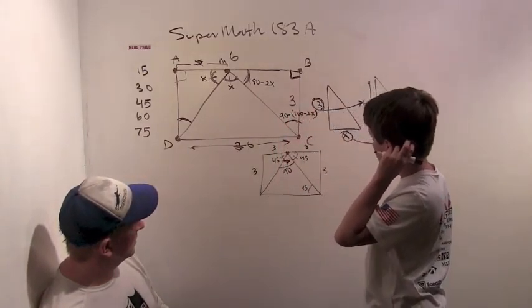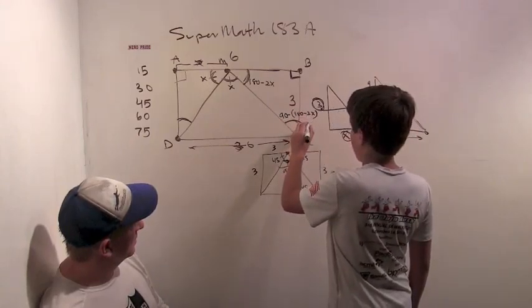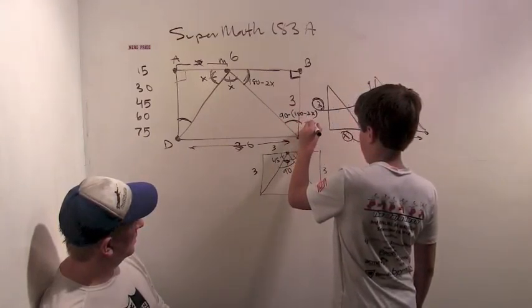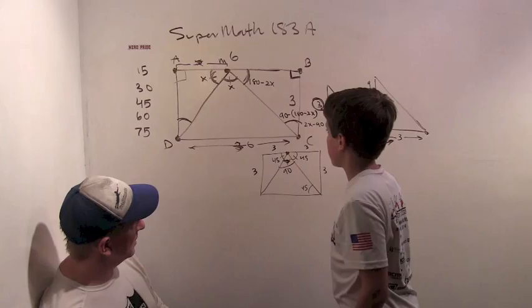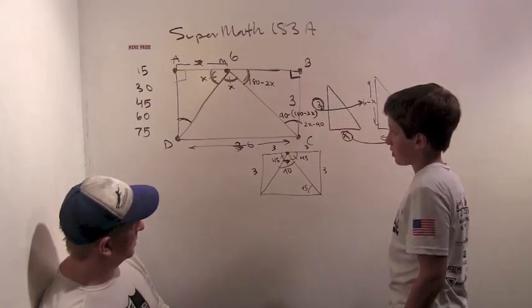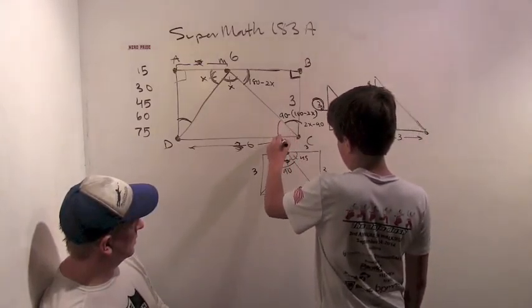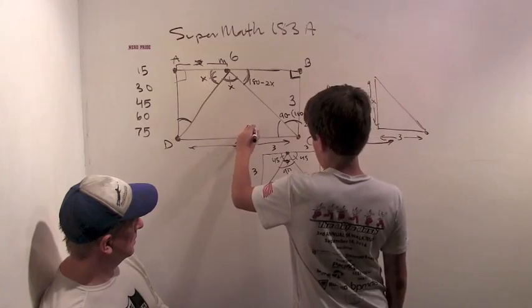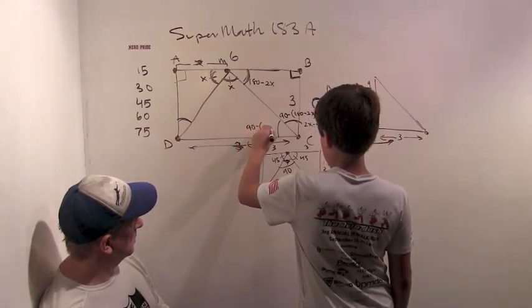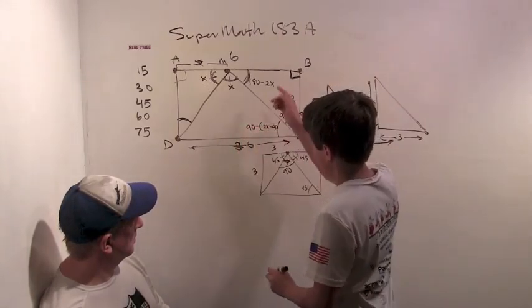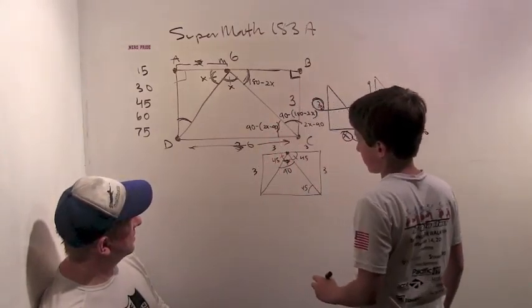Which makes that what? So, 2X minus 90. 2X minus 90. And then this is 90 minus 2X minus 90, which is just going to be 180 minus 2X. Interesting.